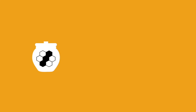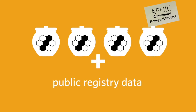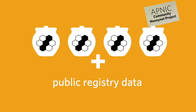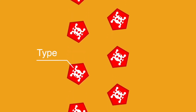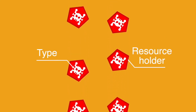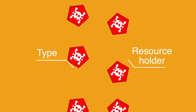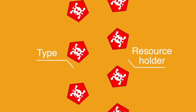DASH uses data collected by several community honeynet projects, including APNIC's, which is combined with public registry data. The threat traffic is categorised by type and the internet number resource holder who is the custodian for that address space and originating ASN.